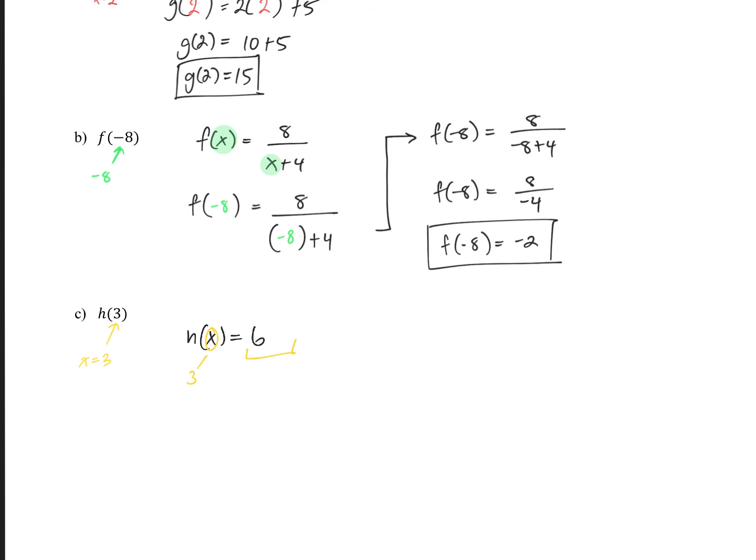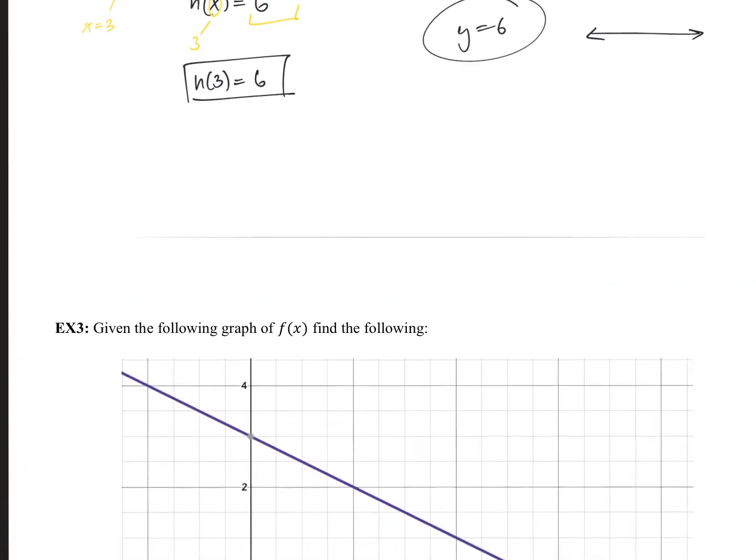Well, don't worry. Remember, this is the constant function. This is the y equals 6 value. That's the horizontal line. We don't have the x value. The x values are any possible value. So, h of 3 is just going to end up equaling 6. This is the constant function. So no matter what x value input, the y value is always going to end up being 6.